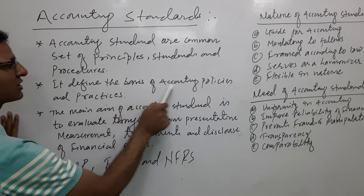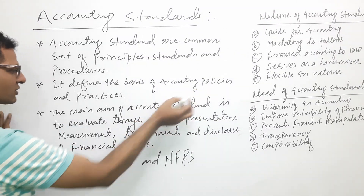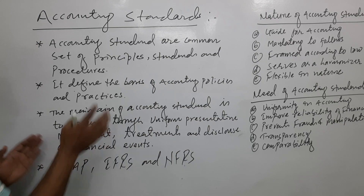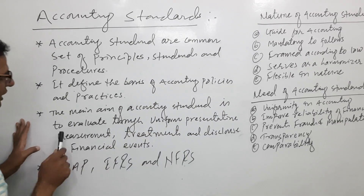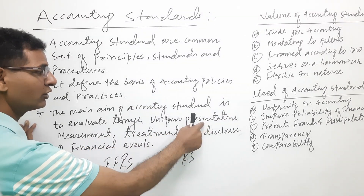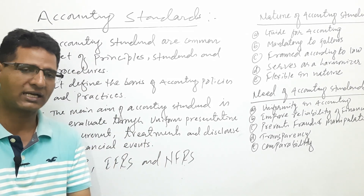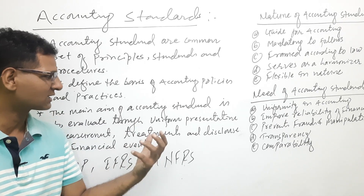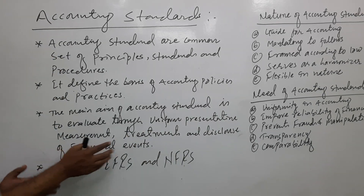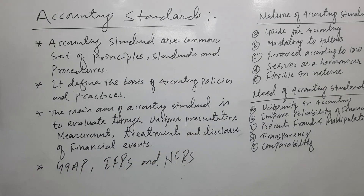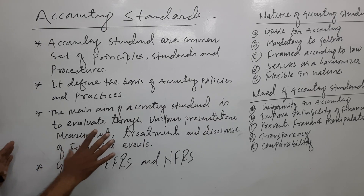Accounting standards define the basis of accounting policy and practices widely across the accounting system. The main aim of accounting standard is to achieve uniform presentation, uniform management and treatment, and finally to disclose financial events, financial data, financial transactions.